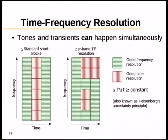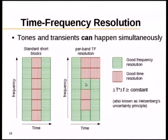Most codecs including Vorbis, MP3, and AAC handle transients by switching the entire frame: normally using good frequency resolution, then switching to good time resolution for a transient, then back. What CELT can now do is make that decision on a per-band basis — for a band where there's a transient but you're still hearing a tone from a previous frame, you can keep good frequency resolution for that band, while using good time resolution for other bands with no tone. This reduces artifacts during transients.